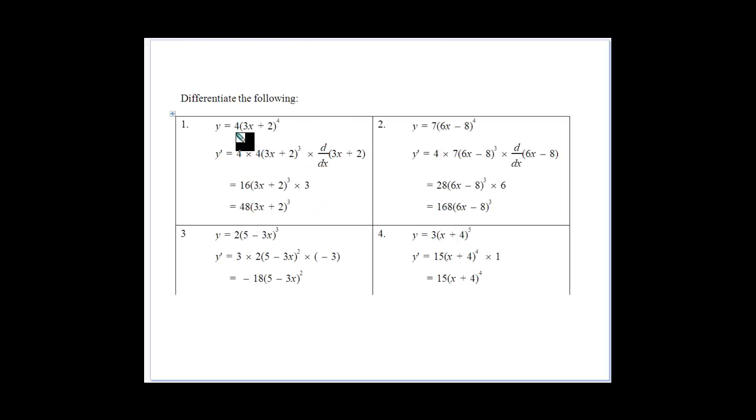When we've got a function to a power there, we bring our power down as normal. For example, bring the 4 down, multiply by the 4, subtract 1 from the power, our bracket stays the same. Then we multiply it by the derivative of whatever we had inside the bracket. So d/dx of (3x - 2) becomes 3. Then 16 times 3 gives us 48.